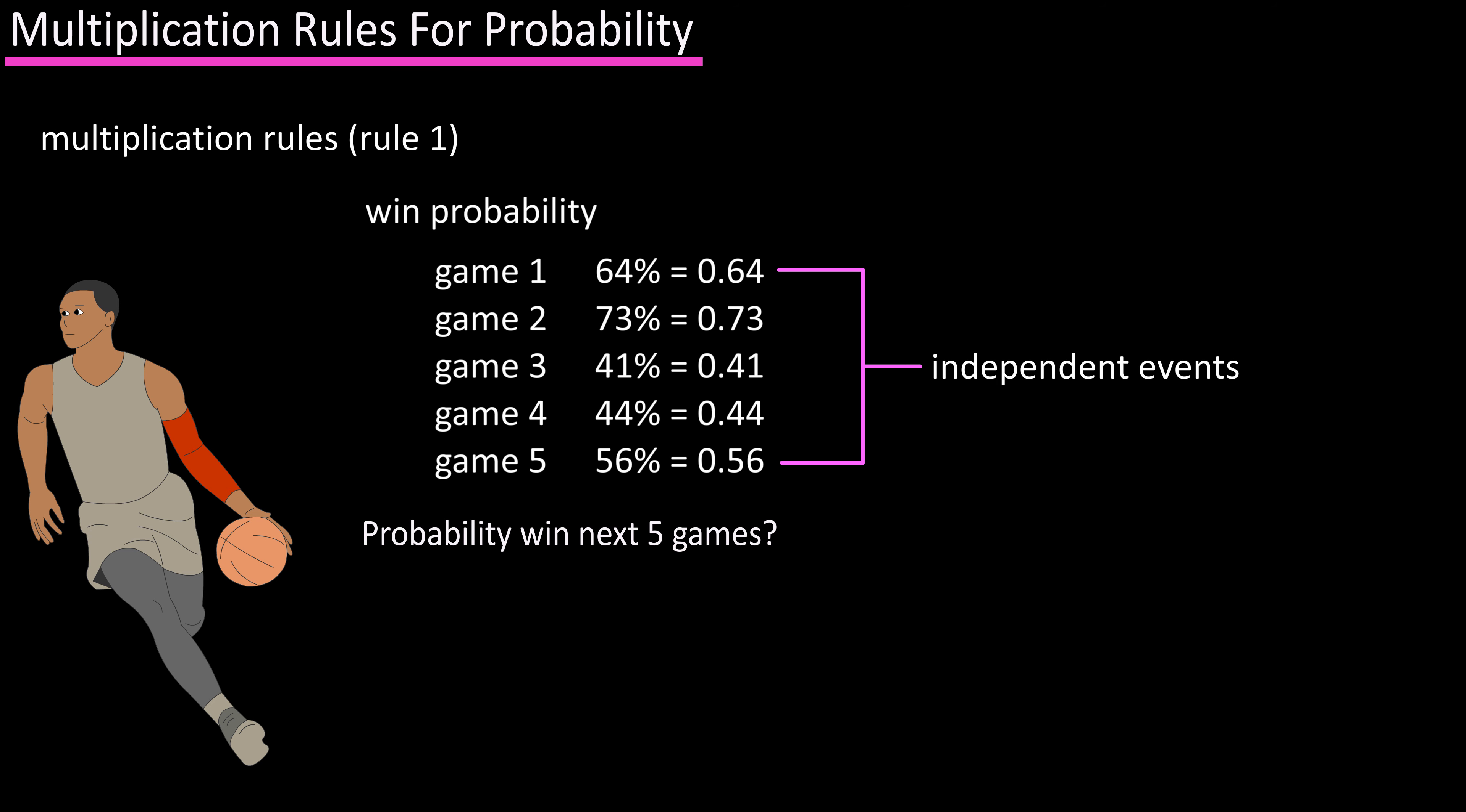So what is the probability they win the next five games? We will assign games one through five as events A through E, and using our first multiplication rule, P(A and B and C and D and E) equals P(A) × P(B) × P(C) × P(D) × P(E).